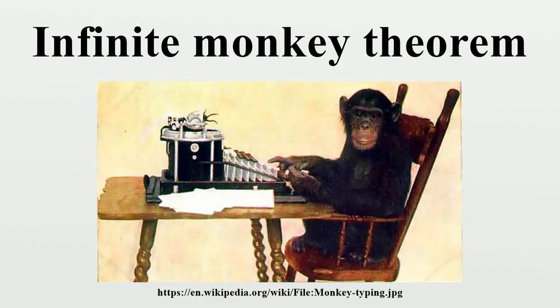As N approaches infinity, the probability XN approaches 0, that is, by making N large enough, XN can be made as small as is desired, and the chance of typing banana approaches 100%. The same argument shows why at least one of infinitely many monkeys will produce a text as quickly as it would be produced by a perfectly accurate human typist copying it from the original. In this case XN equals (1/50)^(6N) where XN represents the probability that none of the first N monkeys types banana correctly on their first try.